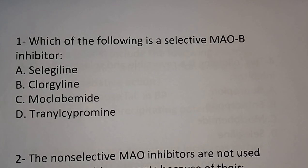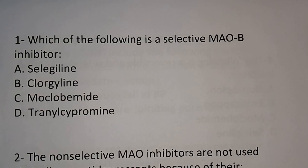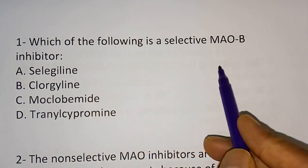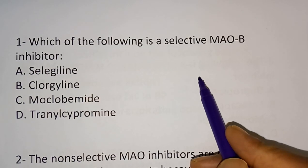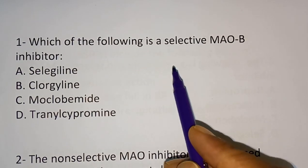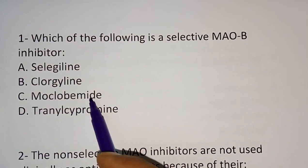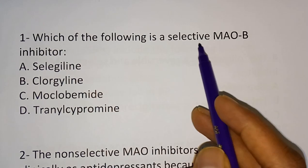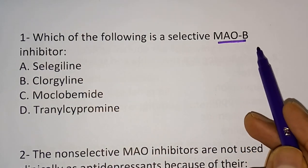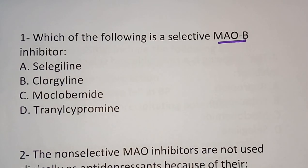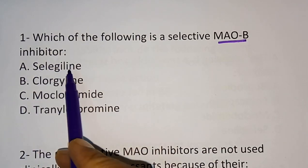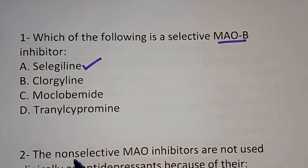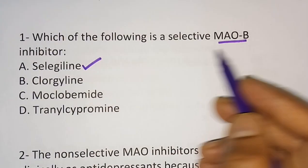The first question: which of the following is a selective MAO-B inhibitor? We studied this in the anti-Parkinsonism drugs chapter. Options are Selegiline, Clorgyline, Moclobemide, Tranylcypromine. MAO-B inhibitor is used in Parkinsonism. The correct answer is Selegiline — Selegiline is the selective MAO-B inhibitor.